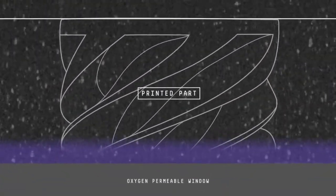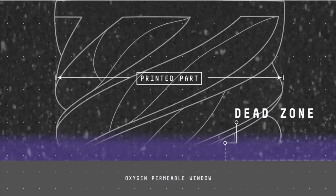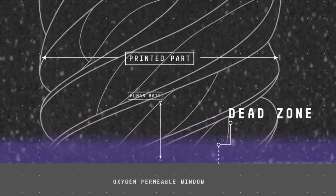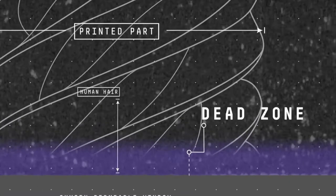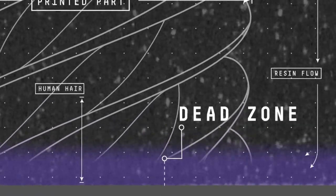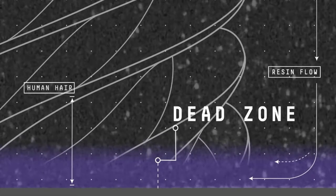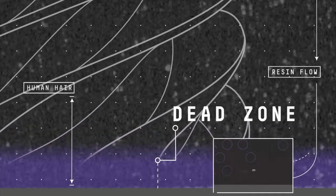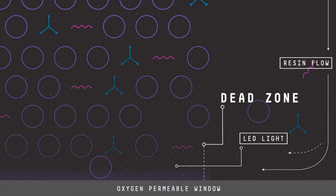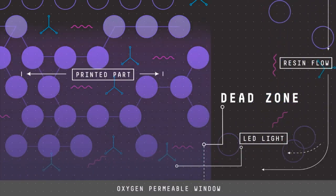Oxygen passes through the oxygen permeable window, creating a thin liquid interface of uncured resin between the window and the printed part, known as the dead zone. The dead zone is only a third of a human hair thick.